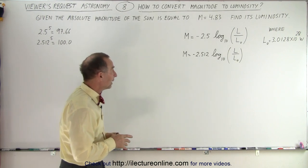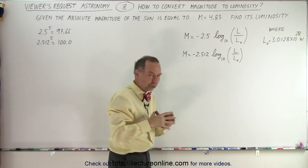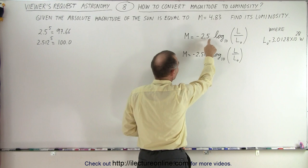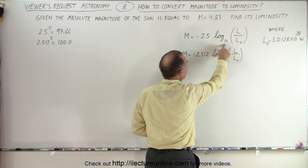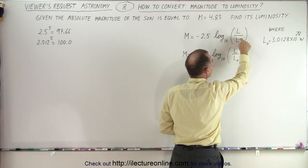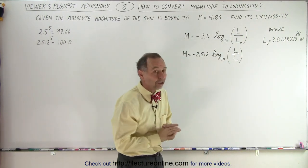We have an equation for that. It says that the magnitude of a star, and we're talking about the absolute magnitude of a star, is equal to negative 2.5 times the log base 10 of the ratio of the luminosity of the star to a baseline luminosity, where that's defined as 3.0128 times 10 to the 28.